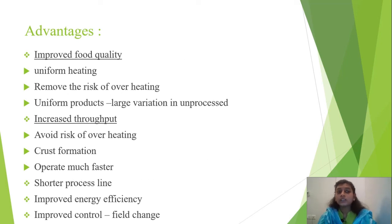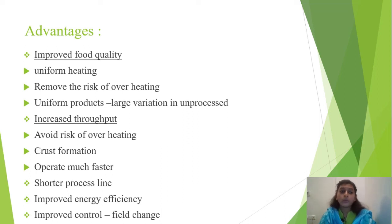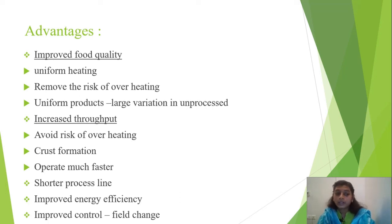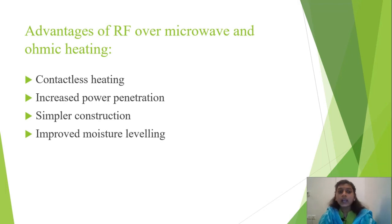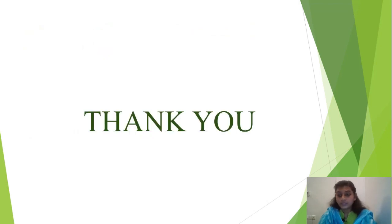Some advantages of RF: it improves food quality, uniform heating is a major advantage, it removes the risk of overheating, produces uniform products, avoids crust formation, and operates much faster. Regarding the advantage of RF over microwave and ohmic heating — since RF is a similar process — the major advantages are contactless heating, increased power penetration, simpler construction, and improved moisture leveling. Thank you for watching this video.